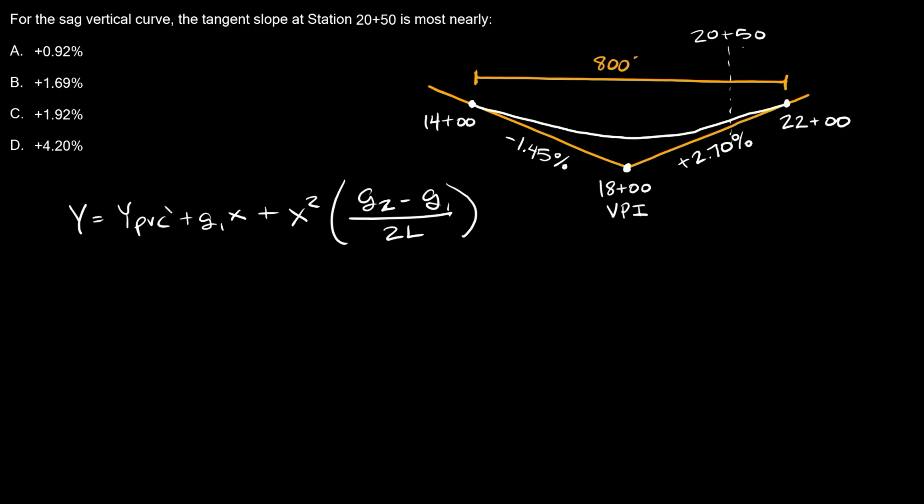Now we're going to take the derivative of this, so we're going to say Y prime with respect to X. So this is just a constant, so that just goes away to zero. G1*X, so this is basically a constant times X, so the X is going to go away, so we're just going to be left with G1 plus,